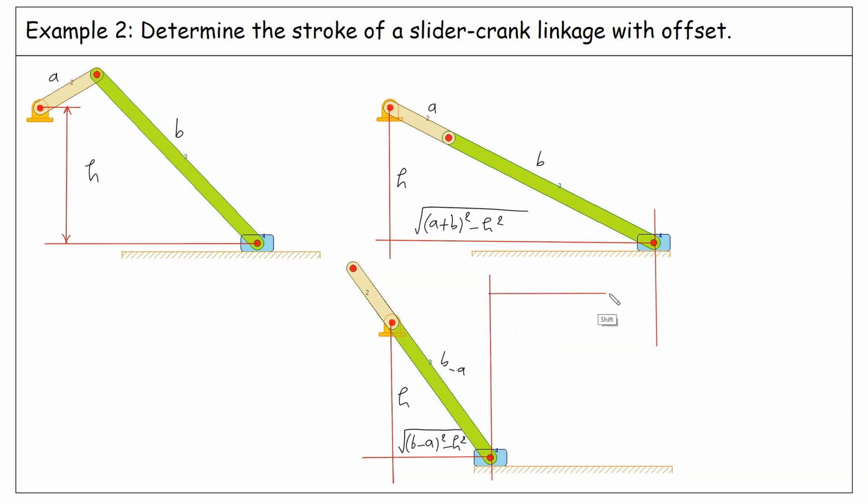Therefore, the stroke becomes the difference between these two extreme positions of the slider, which is the square root of A plus B squared minus H squared, minus the square root of B minus A squared minus H squared.